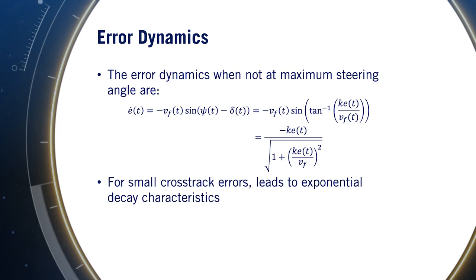For small cross-track errors, we can simplify the denominator of this expression by assuming the quadratic term is negligible. This leads to the realization that the cross-track error evolution follows a first-order differential equation. And the solution for this ODE is an exponential. Since k is positive, we see that the error decays exponentially to zero. The most interesting aspect is that the decay rate is completely independent of the speed. So faster vehicles will travel farther while converging to the path, but will converge to the path at the same time as slower moving vehicles.